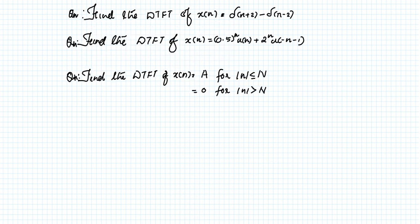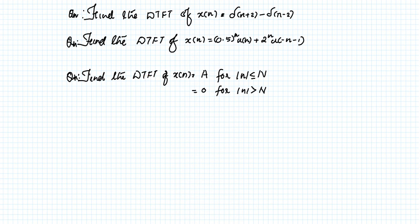In the next lecture we will discuss three more questions: the DTFT of δ[n+2] − δ[n−2], using what we just derived about δ[n−k]; a two-part signal involving a·u[n] and u[−n−1]; and a rectangular pulse of amplitude A for |n| ≤ N and zero otherwise.